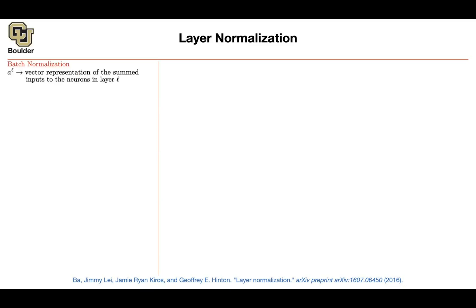I'm going to go through a very simple neural network — actually a single neuron of a neural network. Let's introduce some notation. Let a^L be a vector representation — it's the summed input to a neuron in layer L. L is for the layer, and a^L is a vector. Each entry is a scalar produced by a dot product: a summation of weights times the input to that layer.